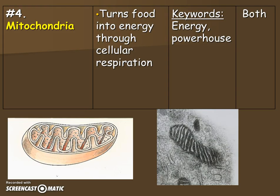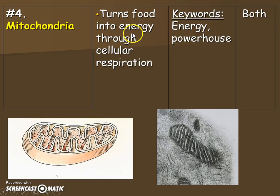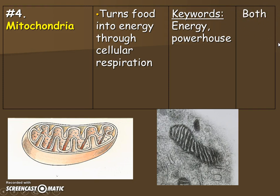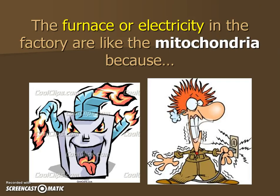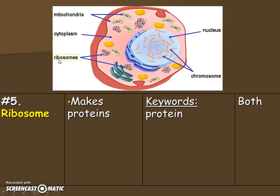The mighty mitochondria — notice it looks like a bean shape with M-shaped folds inside. M for mitochondria. Sometimes they look like the edges of lasagna, so make sure you have those folds in your drawing. Its job is all about cellular respiration — turning sugar or food into usable energy. We think about the mitochondria as the energy area or the powerhouse of the cell. It's in both plants and animal cells. Our analogy is that since this is about energy, it's like the furnace or the electricity inside the factory.